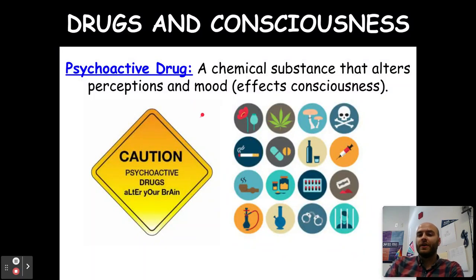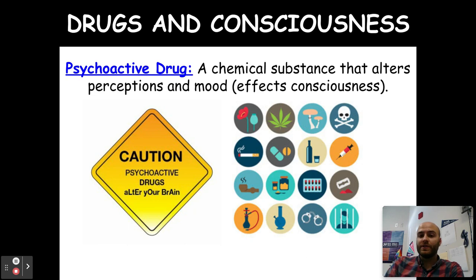A psychoactive drug is defined as a chemical substance that alters perception and mood, or affects our consciousness. So any of those things that we ingest that can alter our perception, change our mood, and alter our brain chemistry — that's the big thing about psychoactive drugs. They actually physically change what's happening in our brain to produce certain effects.